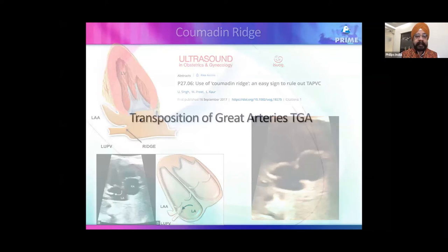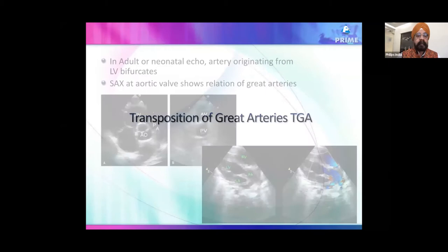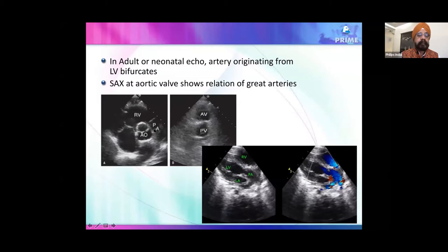Next: indirect signs for transposition of great arteries (TGA). Direct signs — the 'saucer and circle' in the three-vessel view, pulmonary artery arising from the LV going posteriorly and bifurcating — are what we use in adult and neonatal echo. But relying only on direct signs, the pickup rate for TGA was low. The pickup rate improved drastically by 2015 with indirect signs, now approaching 90%.